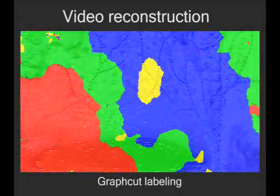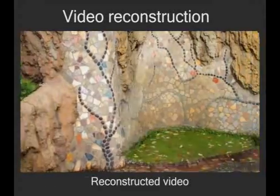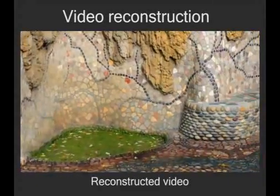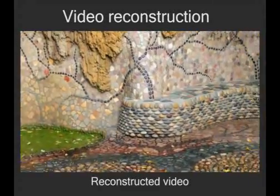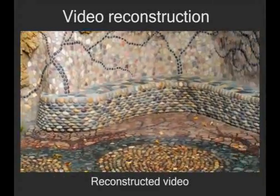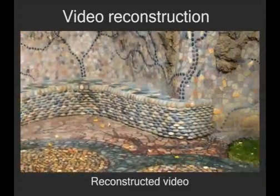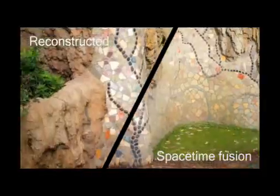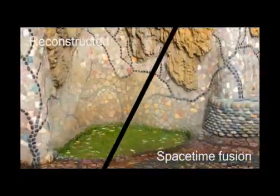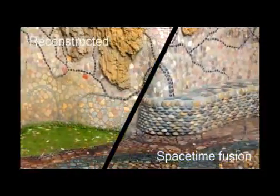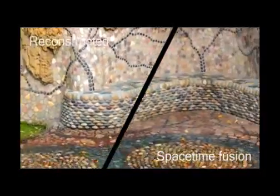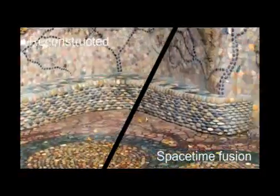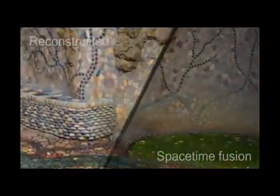The reconstructed video may contain artifacts. For example, in this reconstruction we can see holes, seams, and temporal incoherence. Our space-time fusion technique reduces these artifacts by incorporating the temporal gradients of the input video.